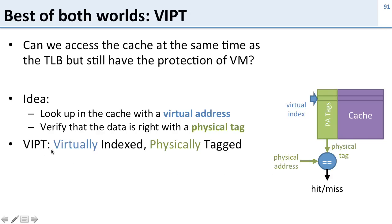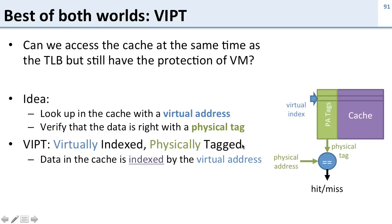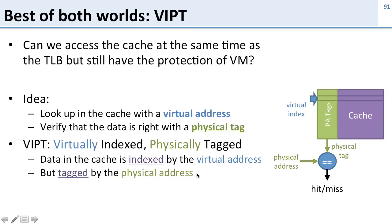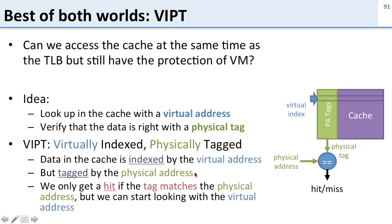This is called a VIPT, or virtually indexed physically tagged cache, and it's the most common sort of level-one cache used in processors today. The data is indexed by the virtual address so we can immediately start looking into the cache, but it's tagged by the physical address so we can look up the TLB in parallel. Because it's tagged by the physical address, we get all the protections of virtual memory — we only get a hit if the tag matches the physical address.